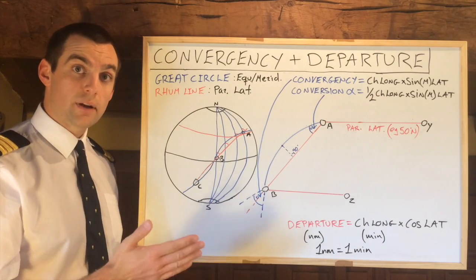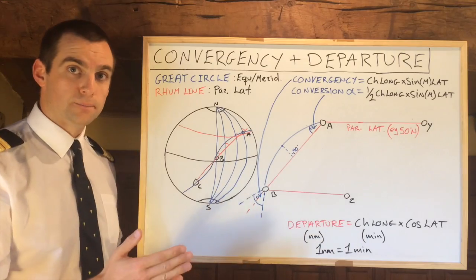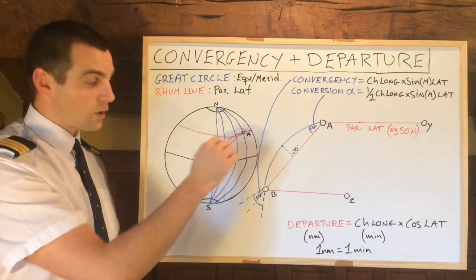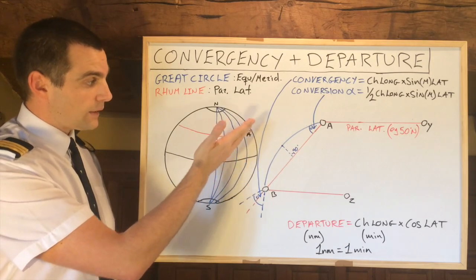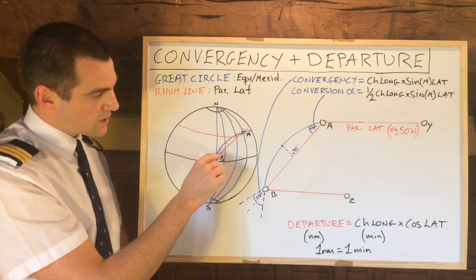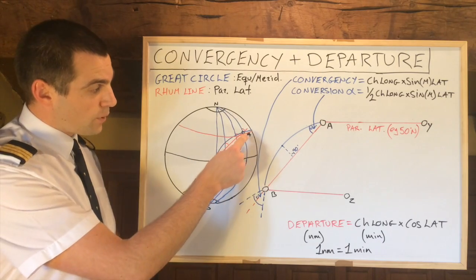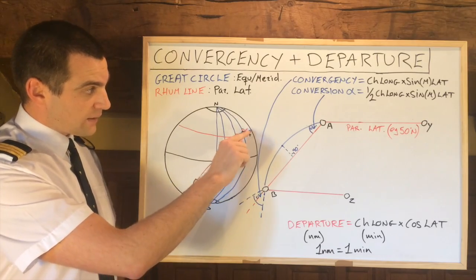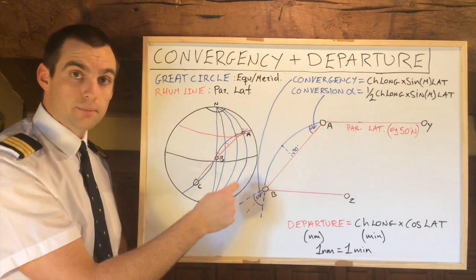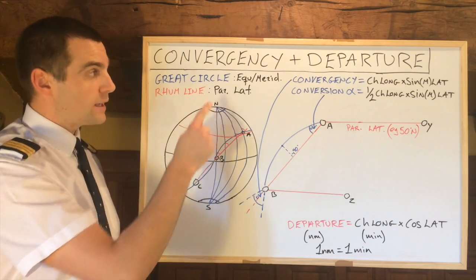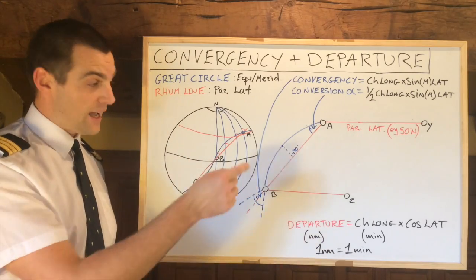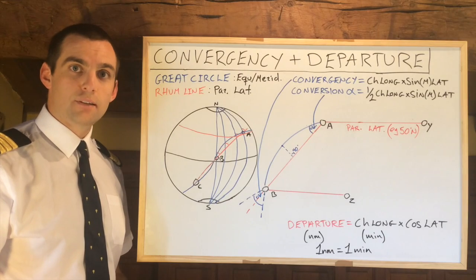A rhumb line is a straight line which cuts the meridians at the same angle. This could be, for example, a parallel of latitude because it would cut all the meridians at 90 degrees, or it could be any line — for example, the red one I've drawn between point A and point B, which cuts the meridians at about 45 degrees. To go from point A to point B, you would select a heading, maintain that heading, and you would get to point B, always using the same heading. However, between point A and point B the great circle line would be a shorter distance; because of the maps we use, it's represented as a curve.